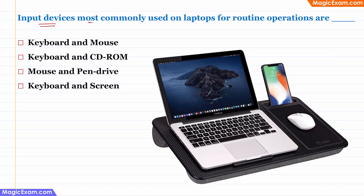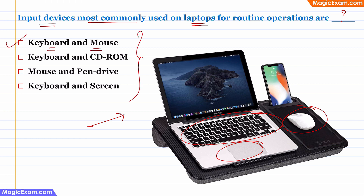Question: What are the input devices most commonly used on laptops for routine operations? As you can see in this laptop, the input devices we commonly use are the keyboard, the touchpad, and the mouse. The correct answer is keyboard and mouse. CD-ROM and pen drive are used for data storage or transfer, not as input devices. Although touch screens can be input devices, the option says only 'screen', which is an output device — so keyboard and mouse is the correct answer.